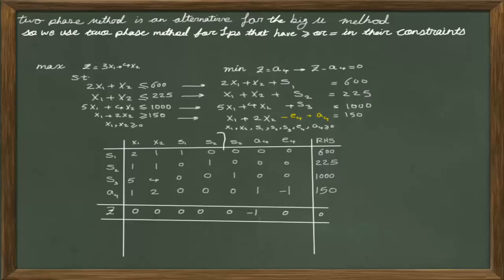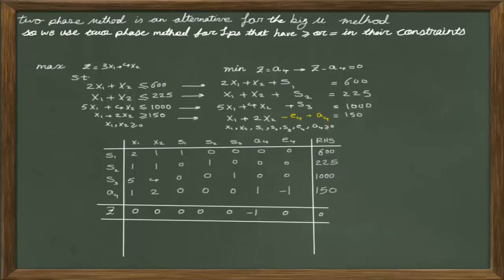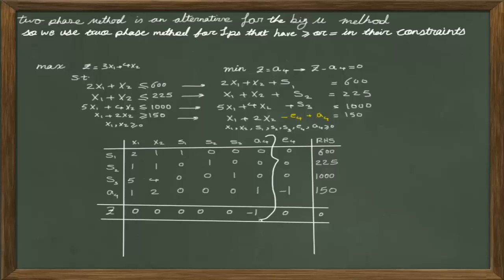We need to see this pattern for s2, s3, and A4, all of which are basic variables. However, for A4 in the row of z, we see a value of negative 1, which violates the basic variable definition — all other elements in that column must be 0. This value must be changed to 0 using an elementary row operation.